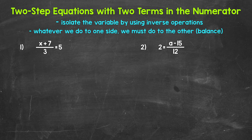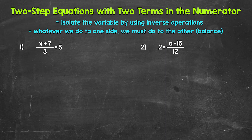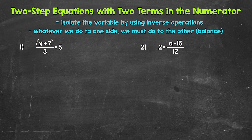Let's jump into number one, where we have x plus seven as our numerator and three as our denominator, equaling five. So something plus seven divided by three equals five. That fraction bar means we are dividing — but not just x by three or seven by three. We can think of that fraction bar as a grouping symbol: x plus seven is being divided by three. We can even put parentheses here to group the numerator.